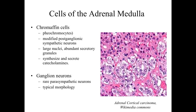Going down into the adrenal medulla — that paler staining region towards the center — we're going to have two types of cells. The first are chromaffin cells, also called pheochromocytes, which are modified postganglionic sympathetic neurons. They have large nuclei, abundant secretory granules, and are involved with synthesizing and secreting catecholamines such as adrenaline and noradrenaline. Scattered among these chromaffin cells are relatively rare parasympathetic ganglion neurons, which are relatively large cells with eccentric nuclei, a euchromatic appearance, and a distinct nucleolus — larger and paler staining compared to the chromaffin cells.